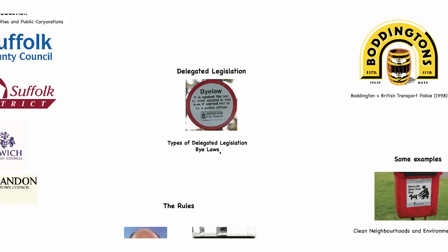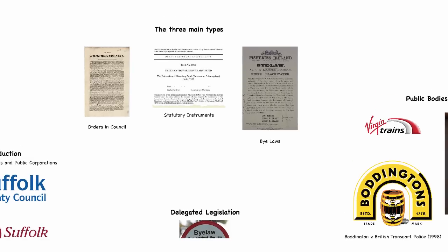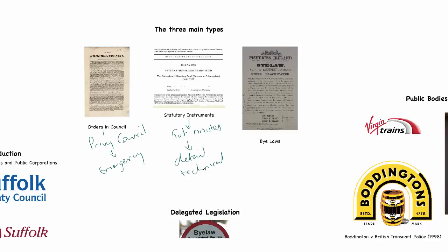This is the third of our types of delegated legislation videos, and in this instance we're going to look at the bylaw. The easiest way to start is to look at the three different types by way of reinforcement. The first was an Order in Council, made by the Privy Council, normally used for emergency delegated legislation. The second was statutory instruments, made by government ministers, dealing with technical detail placed onto the bones of a parent act.